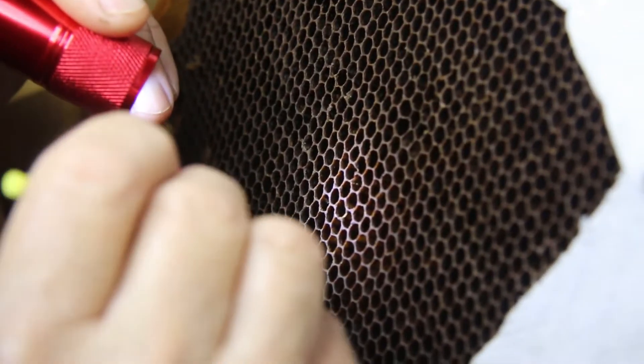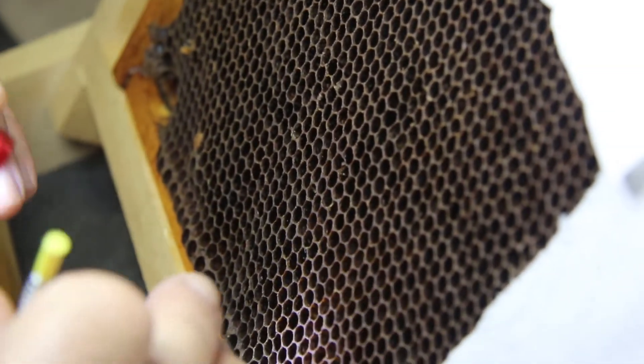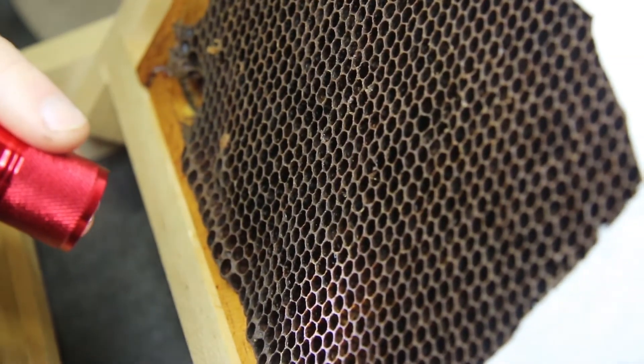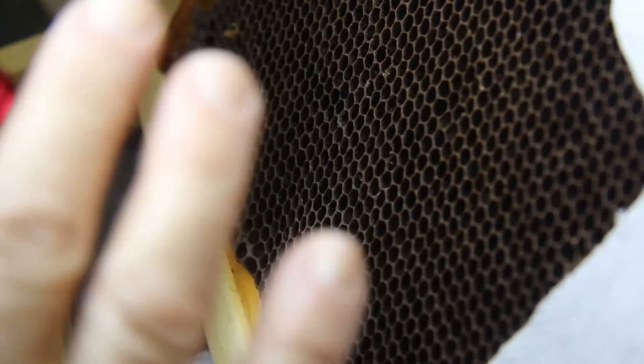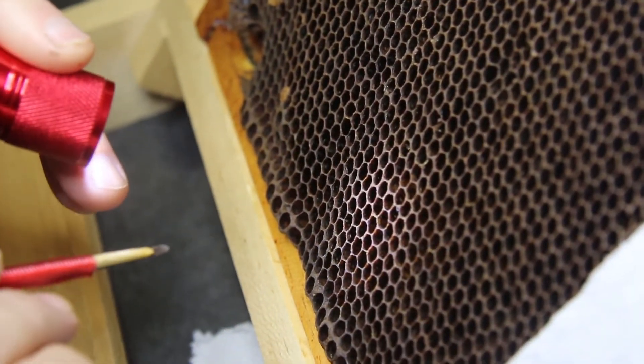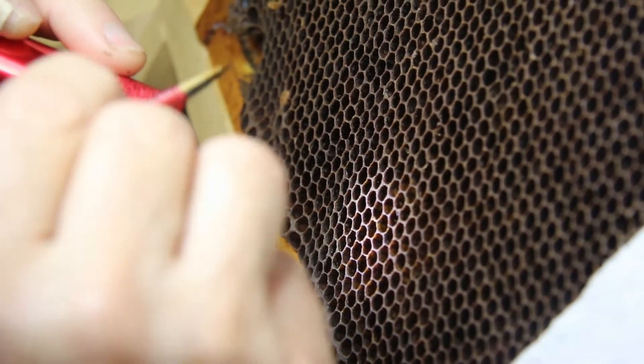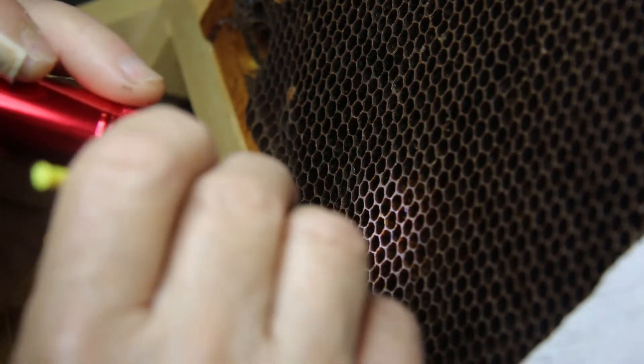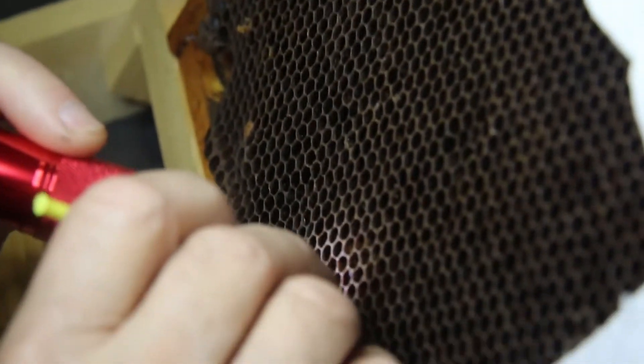I use a little flashlight and get down in there. You want to look for eggs first. You want to find eggs because the queen's laying in a concentric pattern. So you find eggs and then work your way in just to the edge of the eggs. That's where you're going to find your youngest larva.